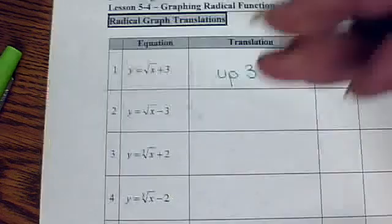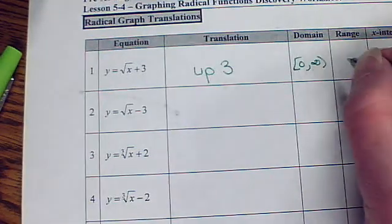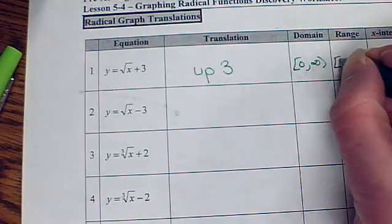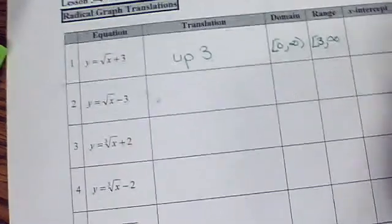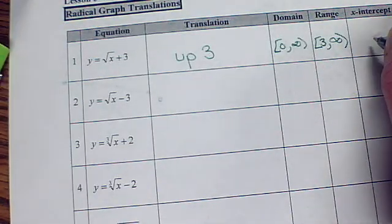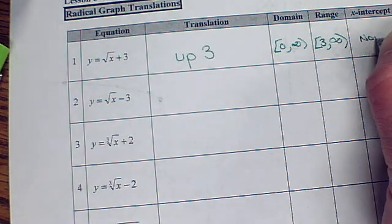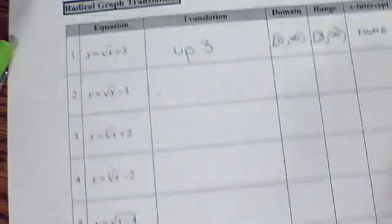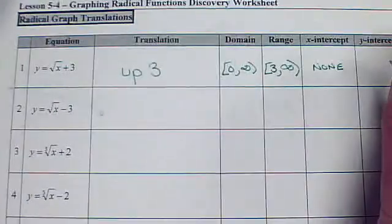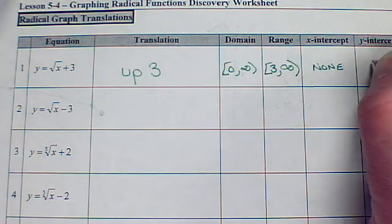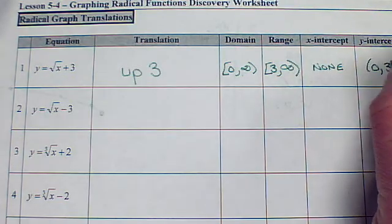That is still going to be 0 to infinity. Now, since it's moved it up, it is going to change the range, though. Now, I've moved it up off of the x-axis, so I'm not going to have an x-intercept. My y-intercept has moved up from 0, 0, 3 steps, so my y-intercept is now going to be 0, 3.